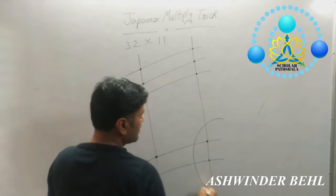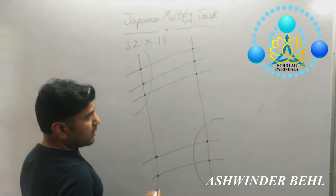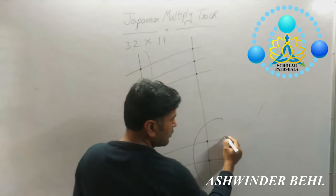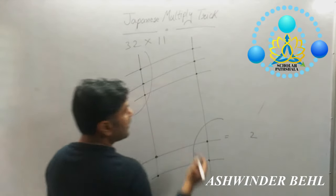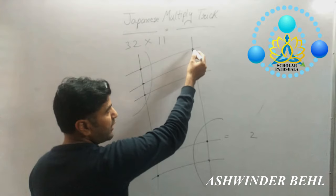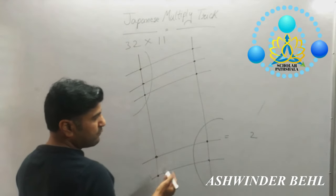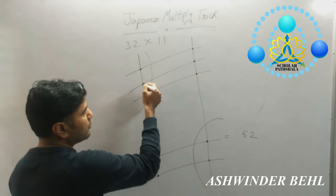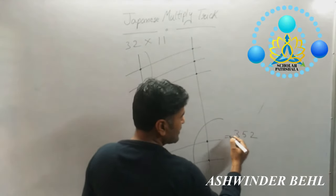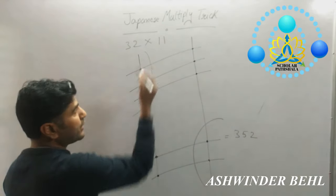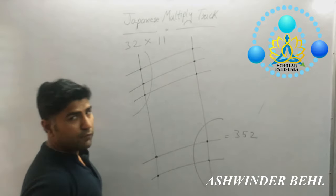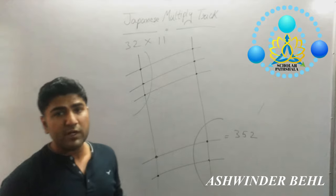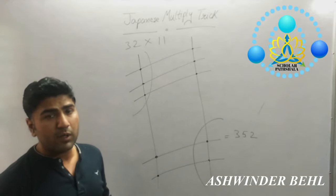And make a semicircle. Here the count is 2, so you can write down 2. Now you can add those points: 1, 2, 3 — that is 4 and 5 in the middle. And the last group: 1, 2, 3. So the answer: 32 into 11 is 352. This way you can do any multiplication between two numbers.